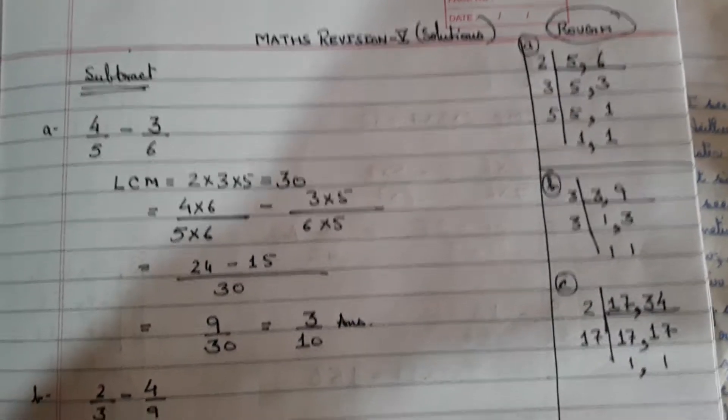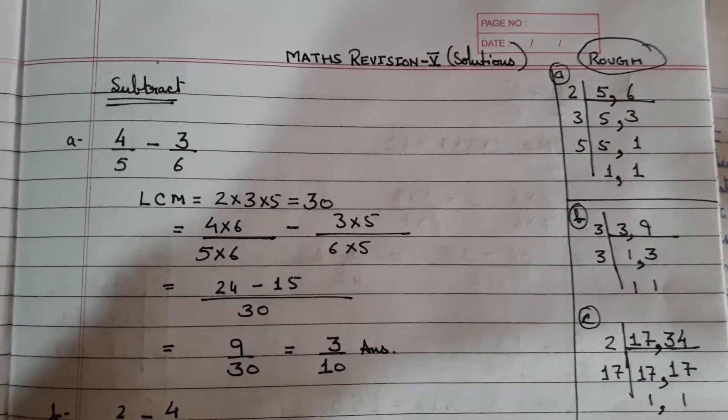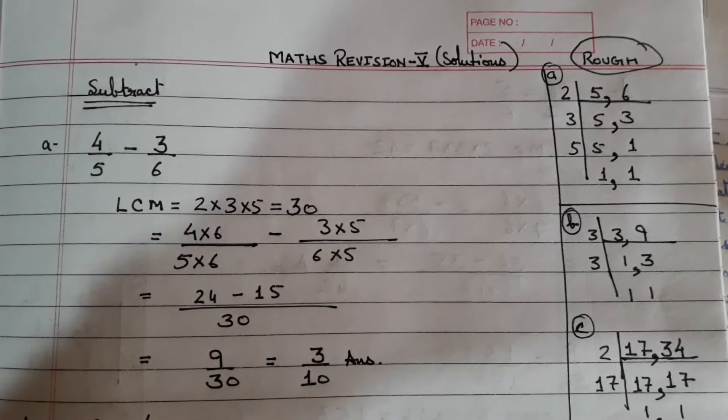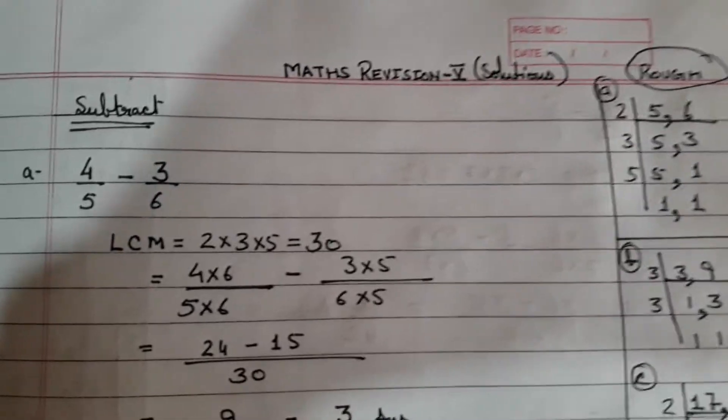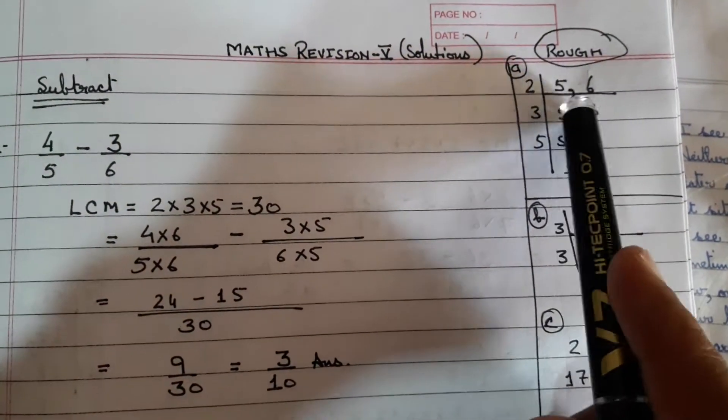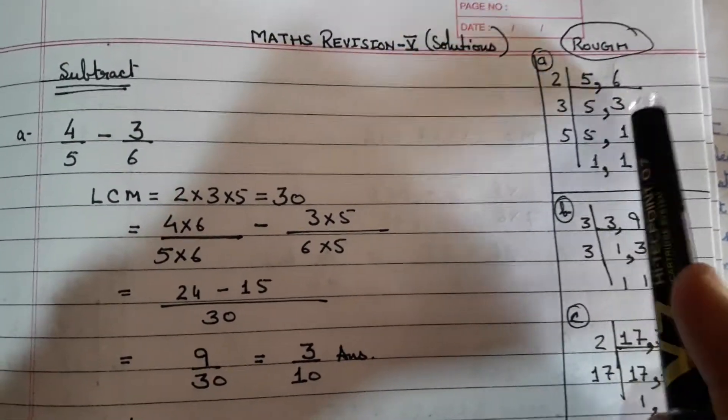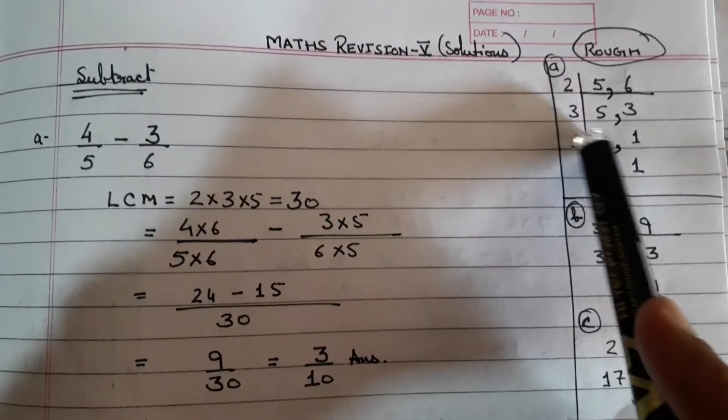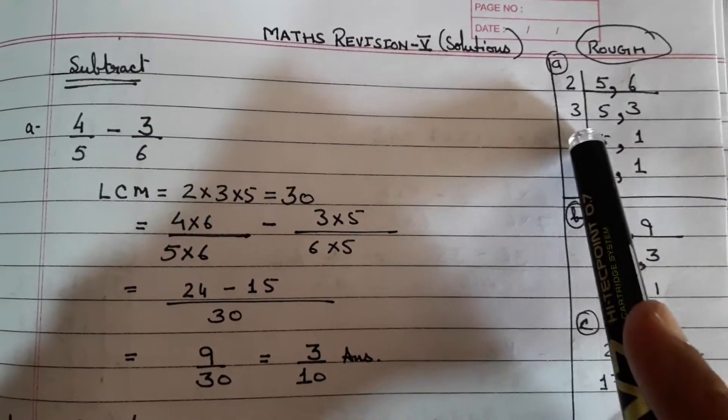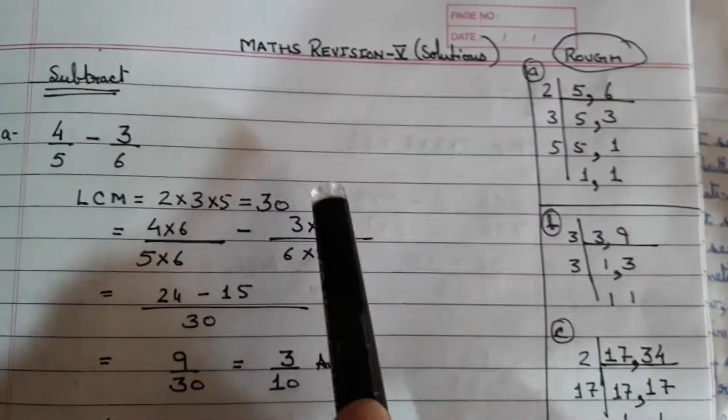4 by 5 minus 3 by 6. The first thing you have to do is find the LCM. If you look at the rough column, 5 and 6 LCM, take all the prime factors. 2 doesn't divide 5 but it divides 6. So 2×3 is 6, then 3 and 5. 5 is also a prime number, also a prime factor. So 2×3×5 is 30.